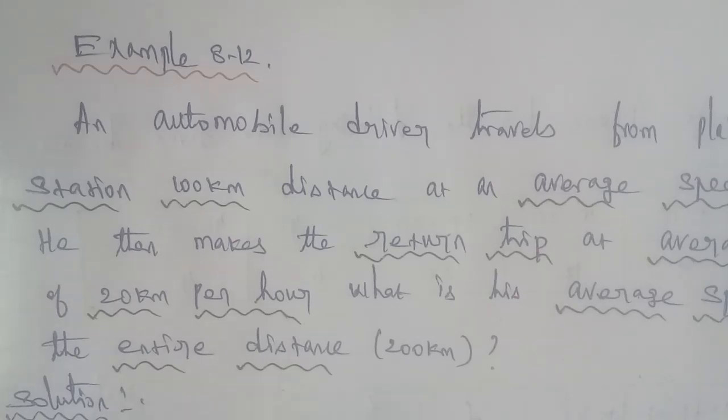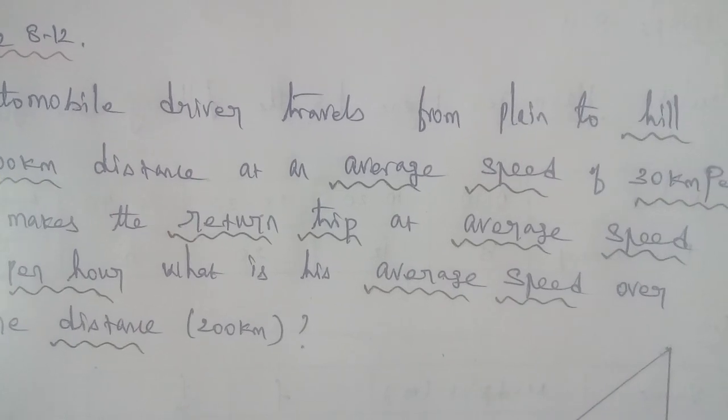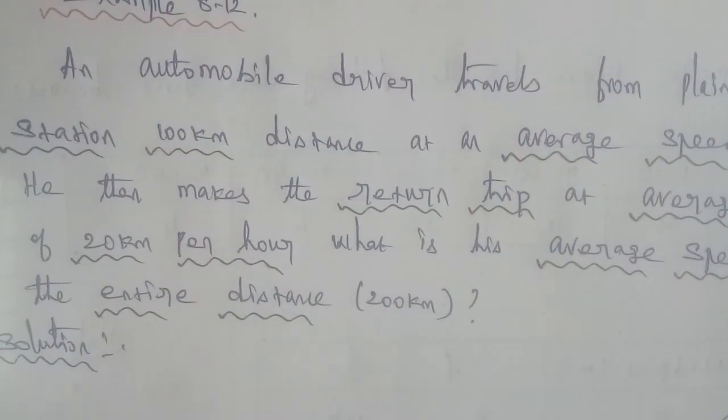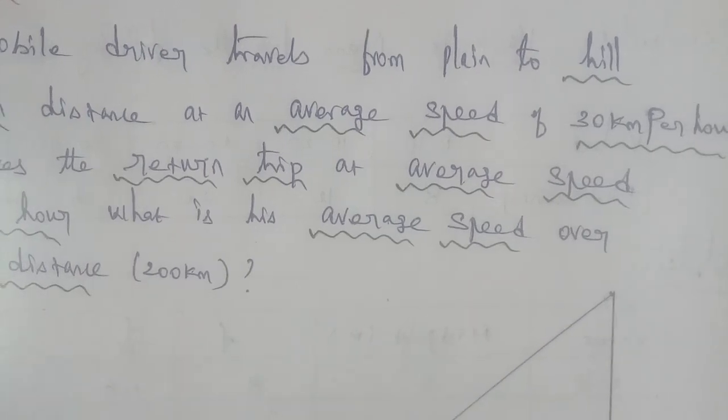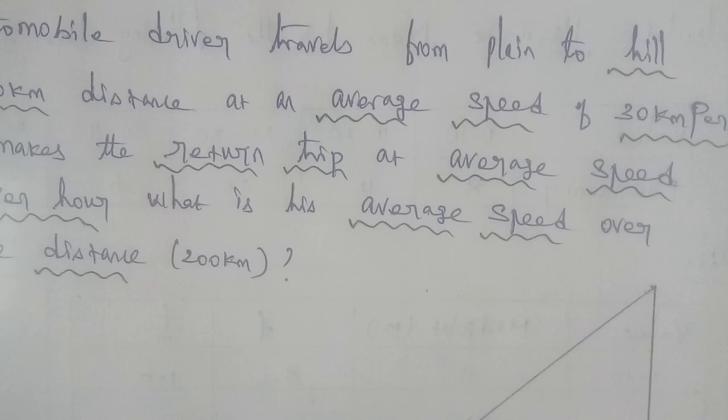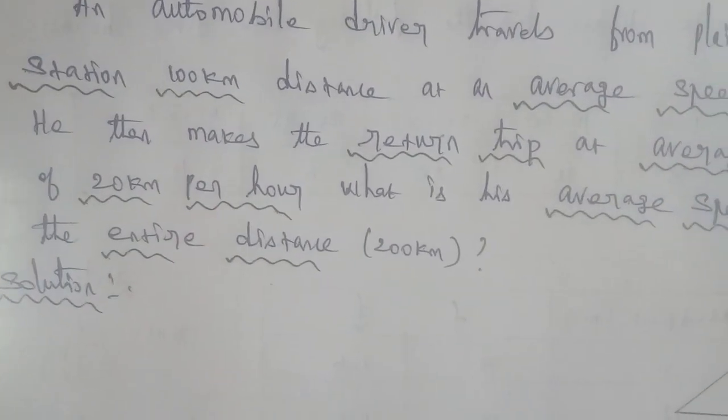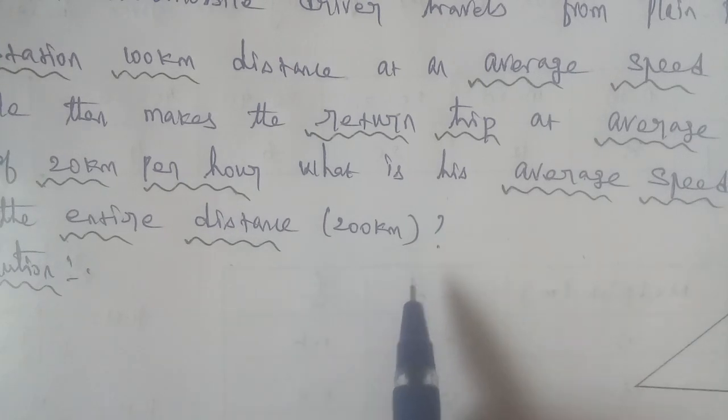Example 8.12. An automobile driver traveled from a plane to hill station 100 km distance at an average speed of 30 km per hour. He then makes the return journey trip at average speed of 20 km per hour. What is the average speed over the entire distance 200 km?